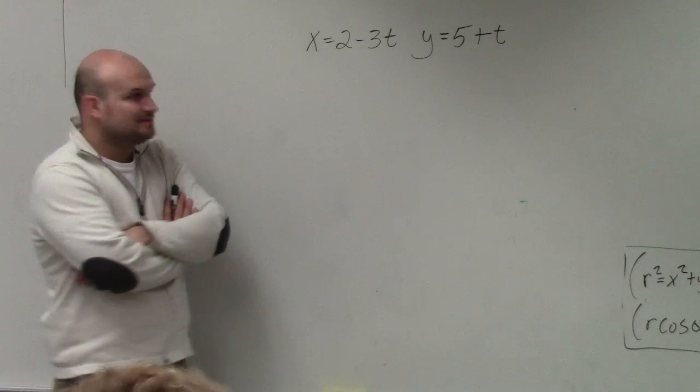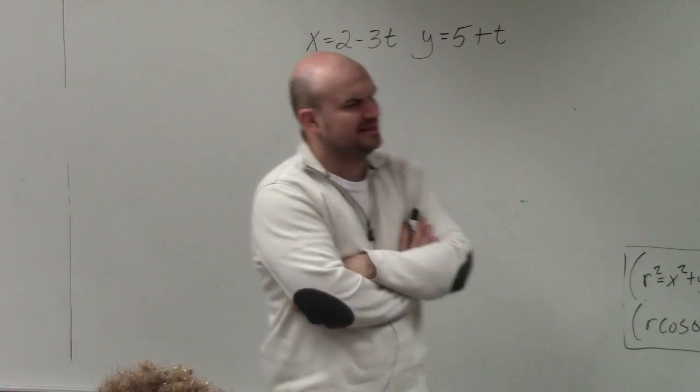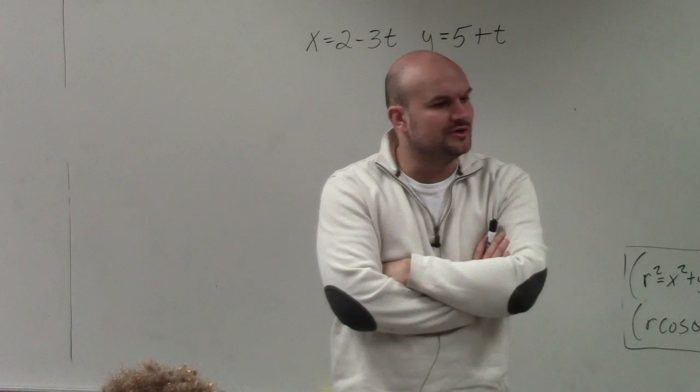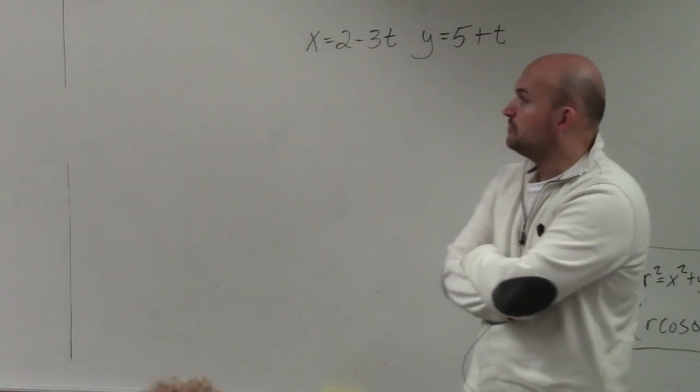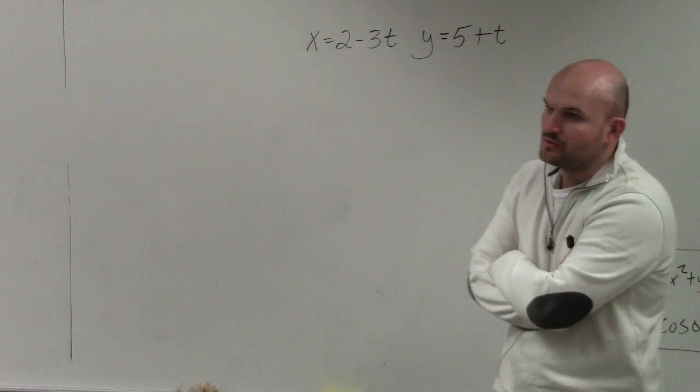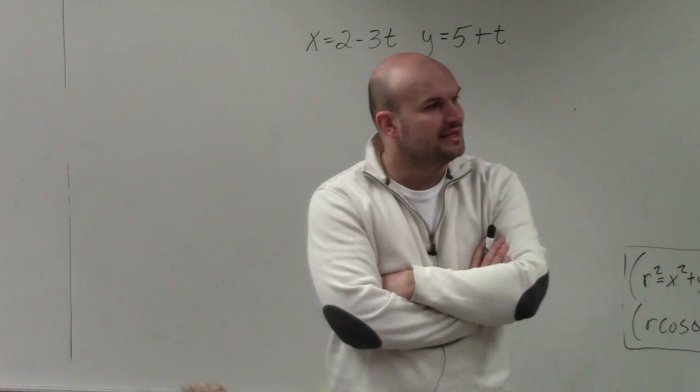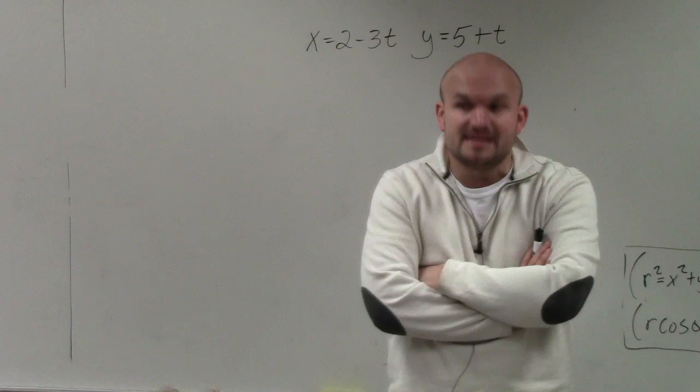All right, so in this example, what they're asking us to do is eliminate the parameter, and then to identify what the graph would look like. If you guys remember, we're looking for a rectangular equation that's not going to have our parameter t as our variable.